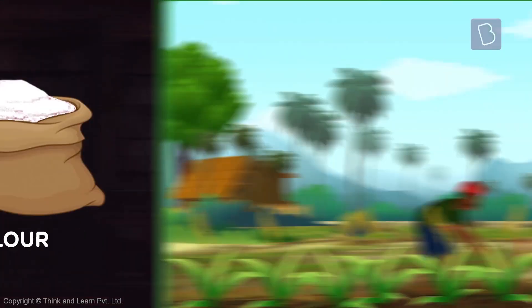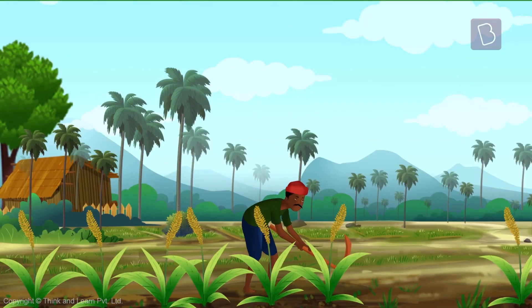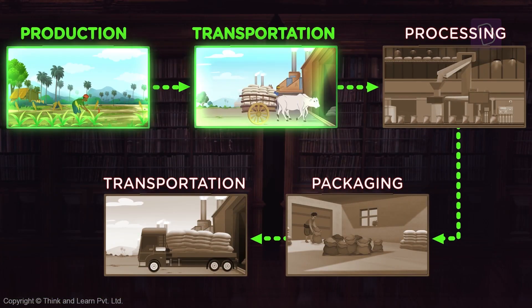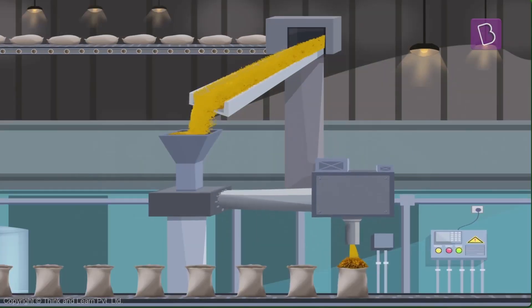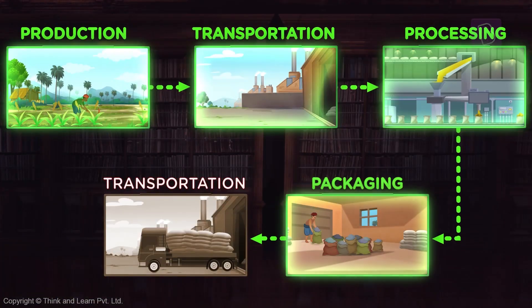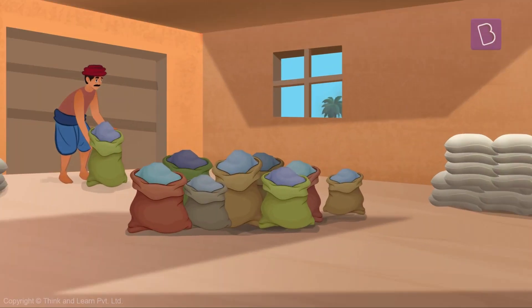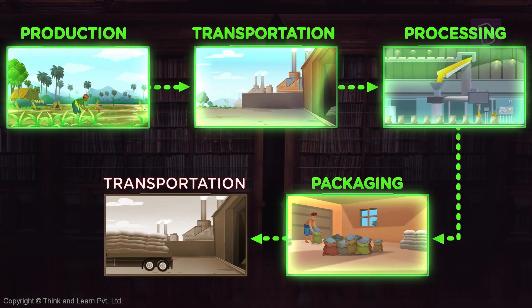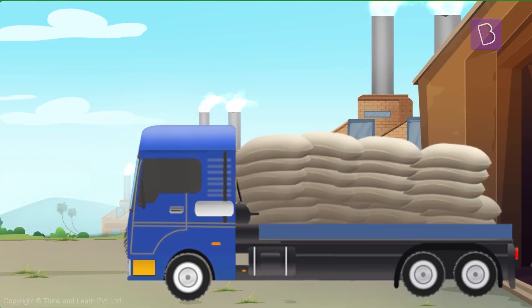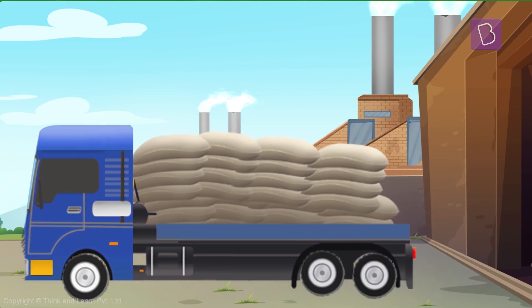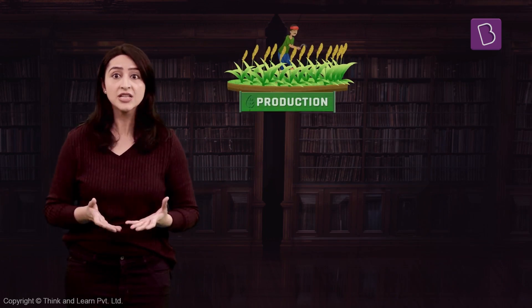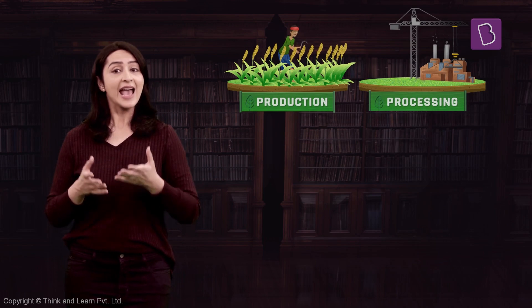Say for example, we buy flour from shops. This wheat is produced in the field by farmers. The farmer sells the wheat grains to factories where they are refined and transformed into wheat powder or flour. This flour is packaged and then transported to your local shops for you to buy and make chapatis.